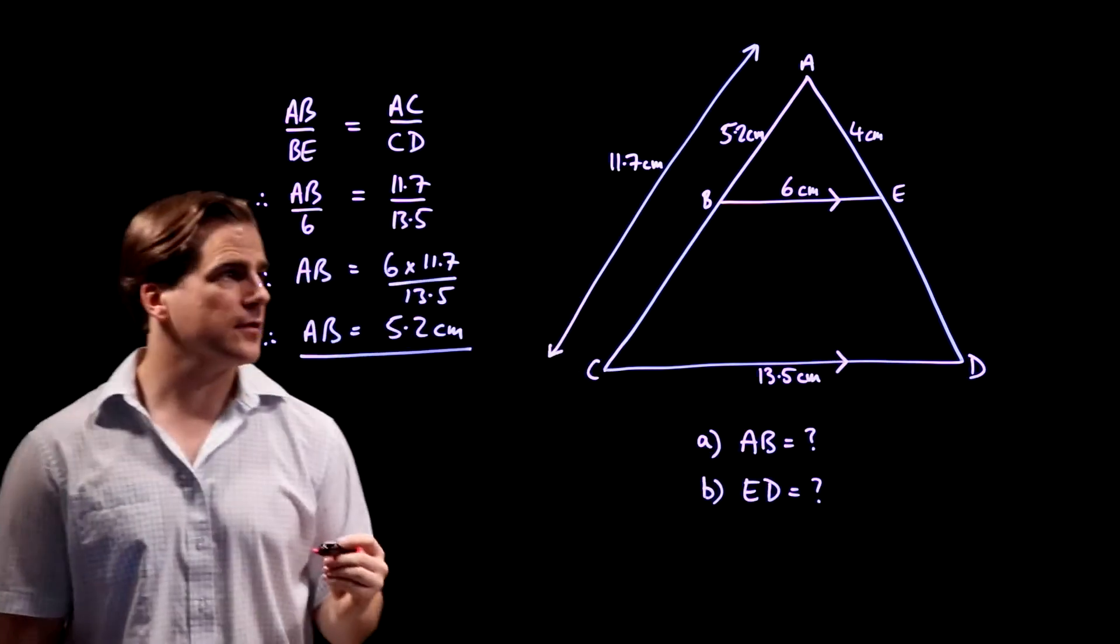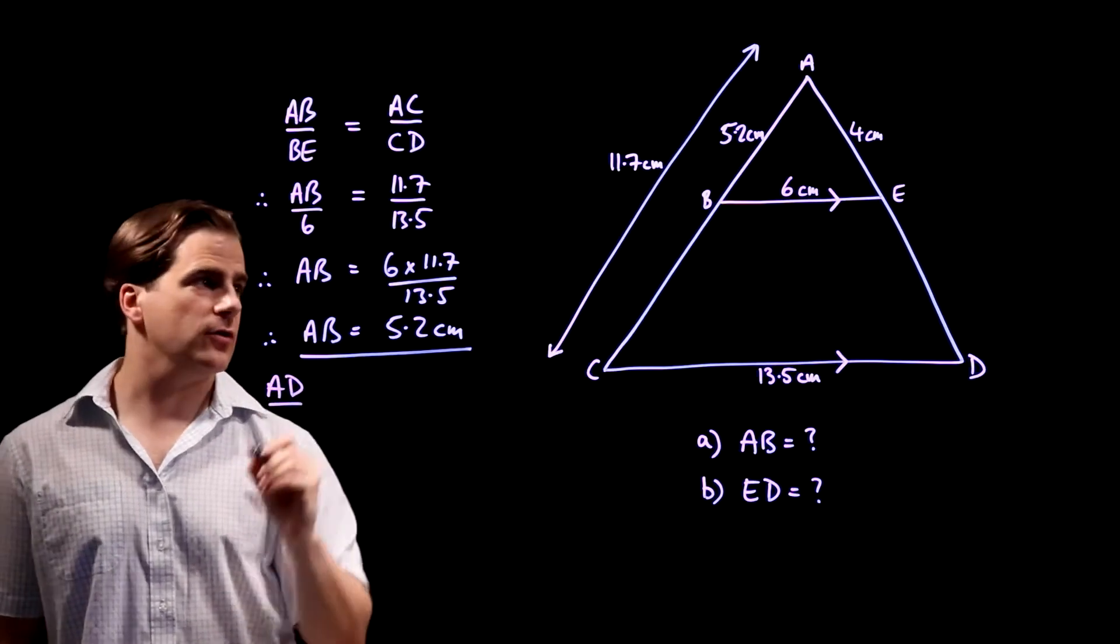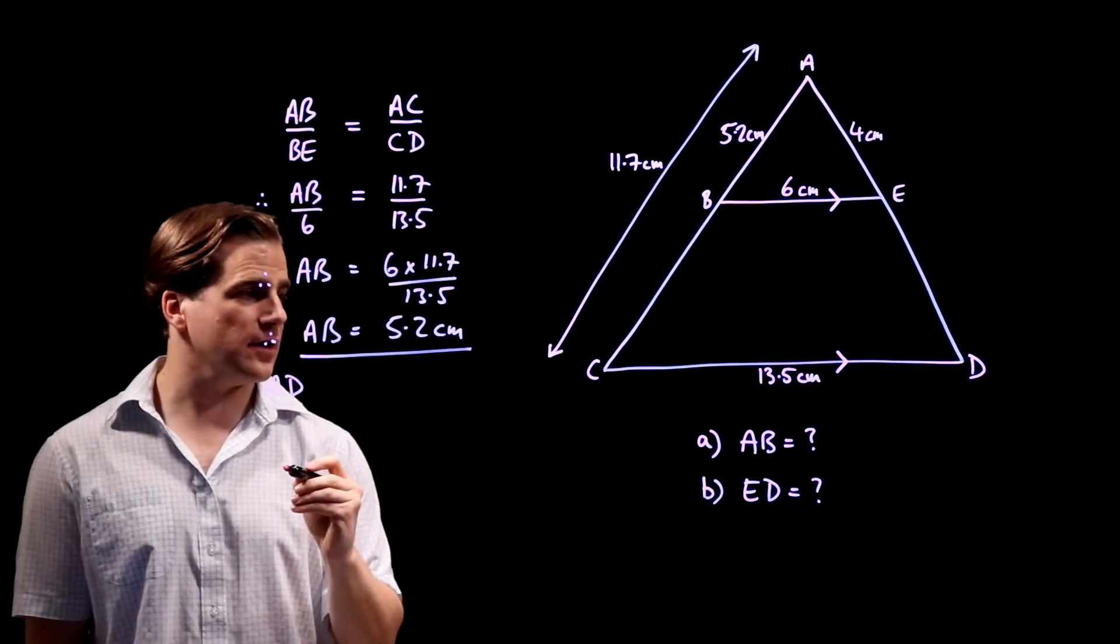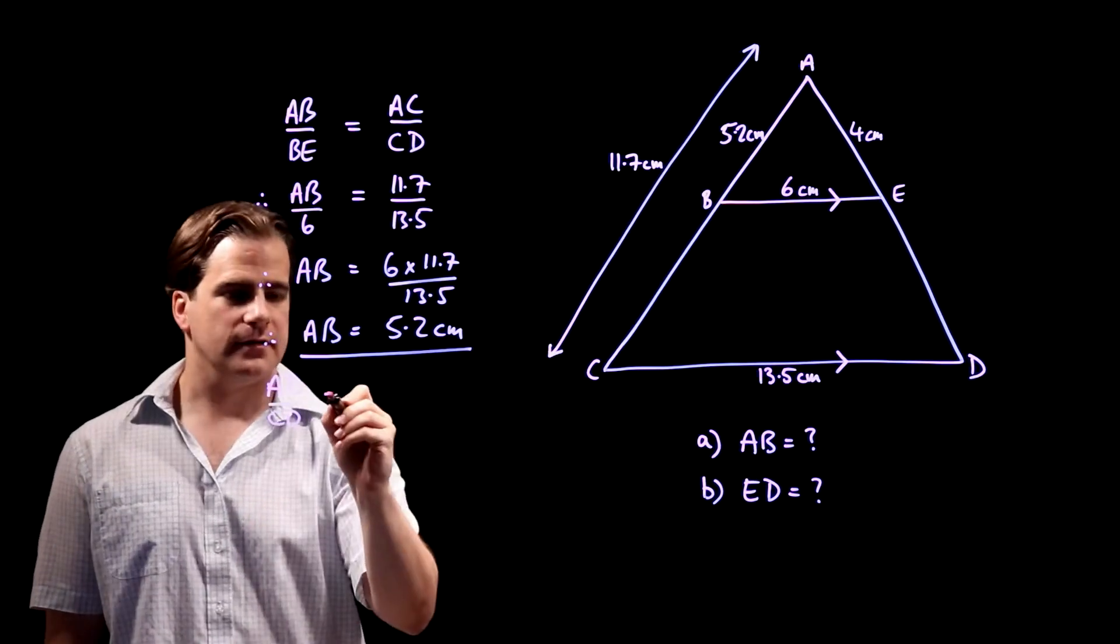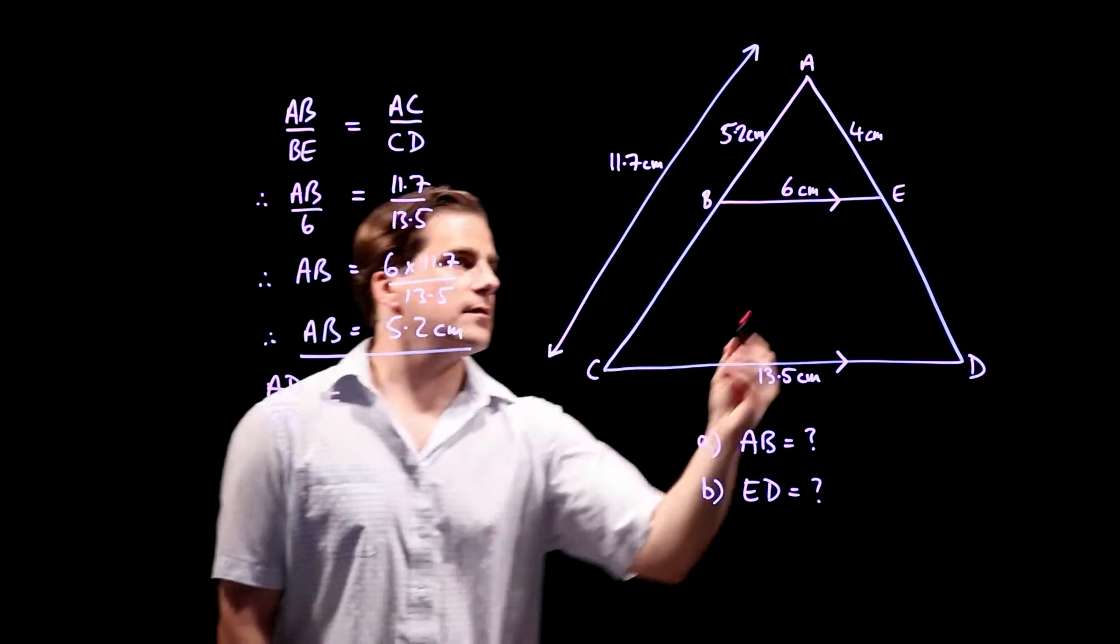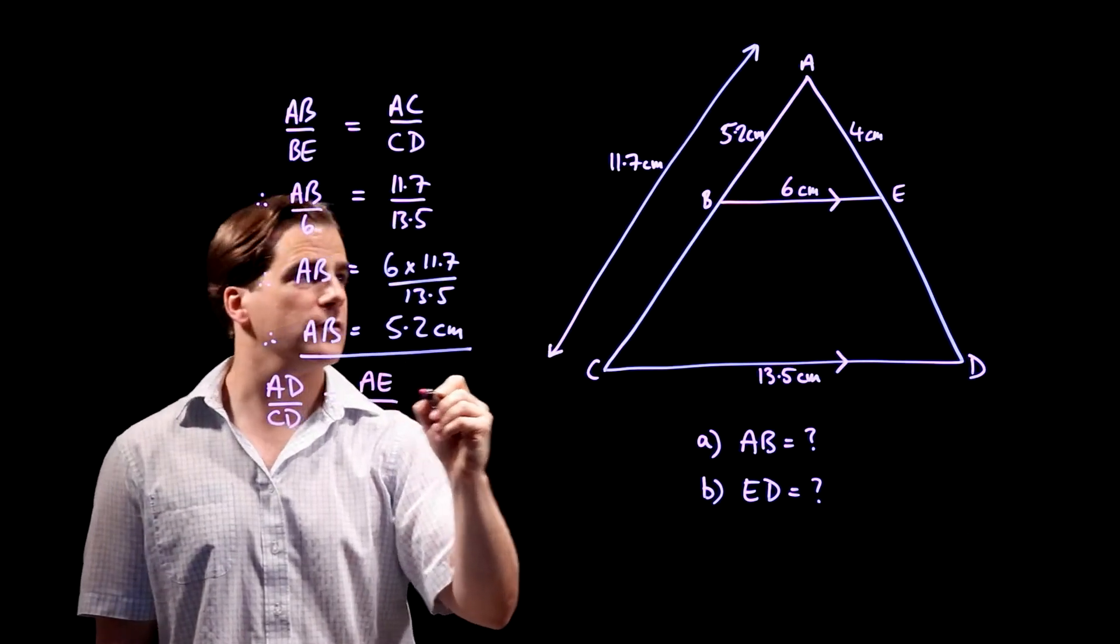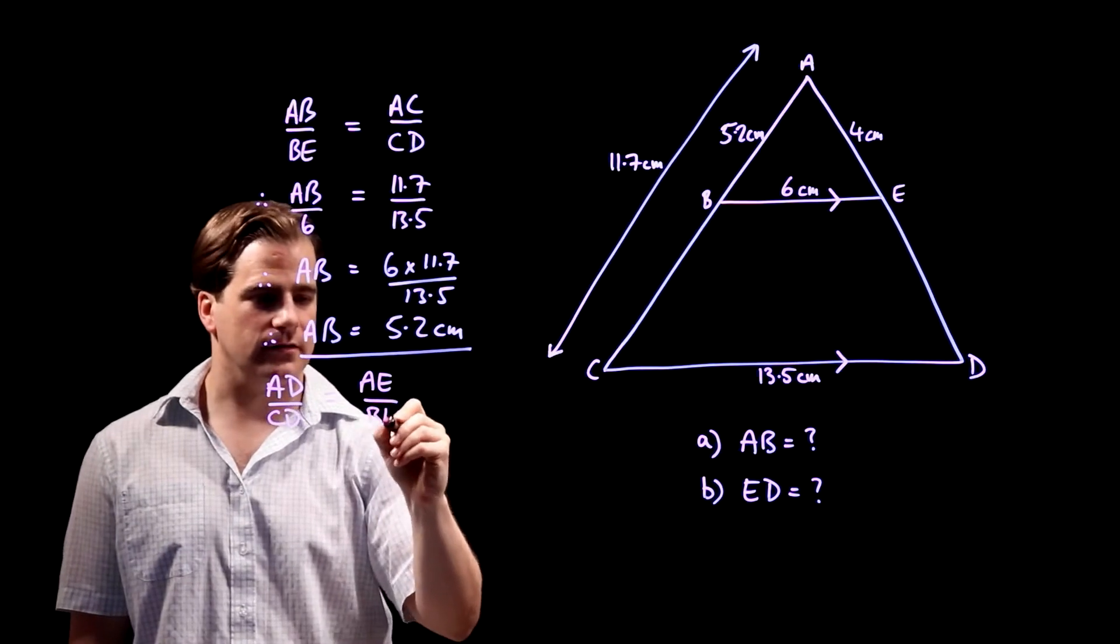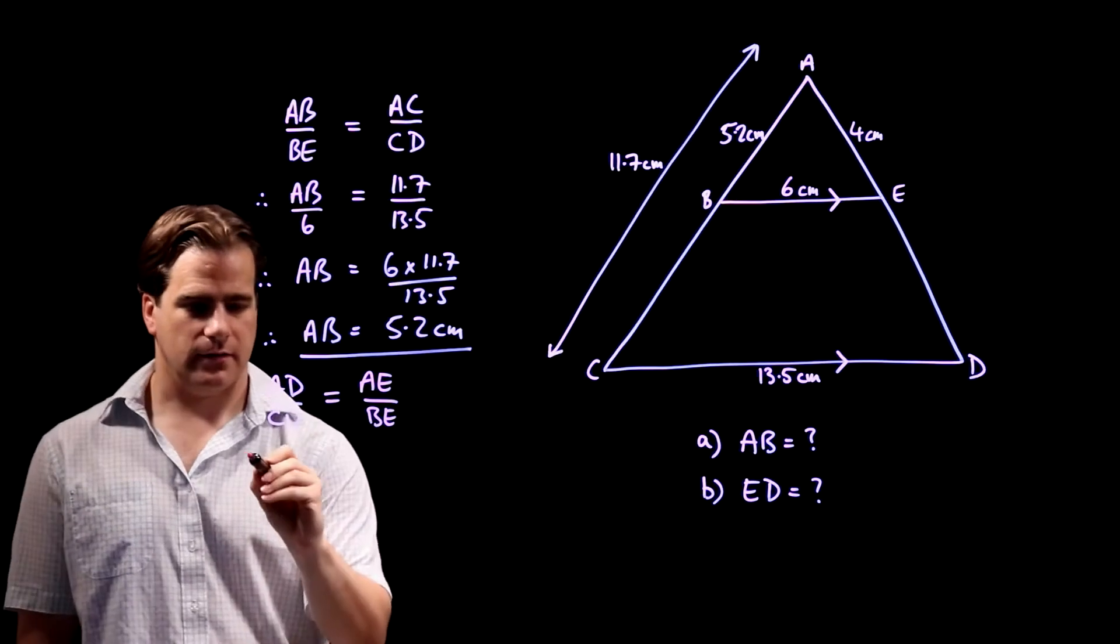So, we know that the ratio of AD to CD, using big triangle dimensions, is the same as AE to BE using little triangle dimensions. Therefore,